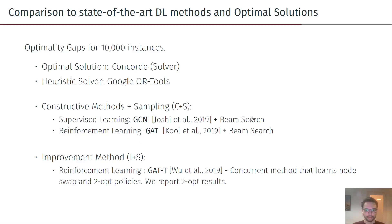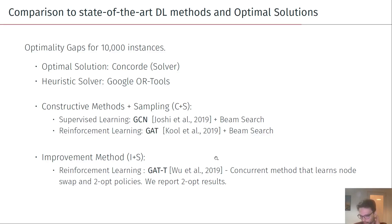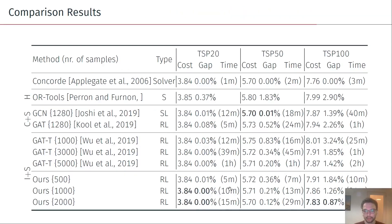Both constructive methods use beam search to achieve state-of-the-art solutions. We also compare to the improvement method from Wu et al., a concurrent reinforcement learning method that also attempts to learn node swap and 2-opt policies, and we report their 2-opt results.